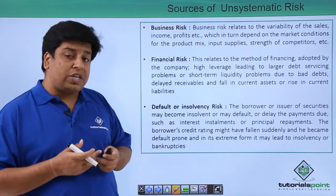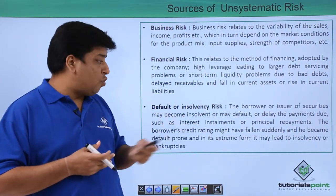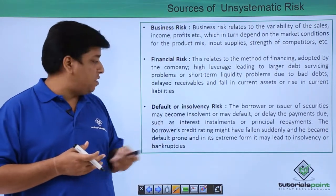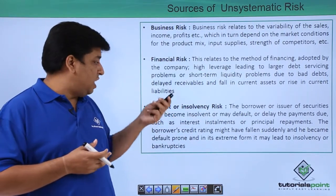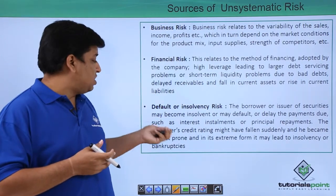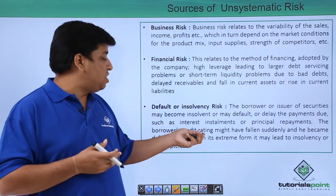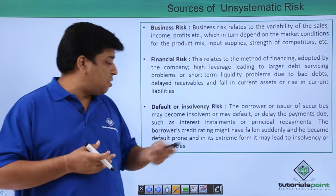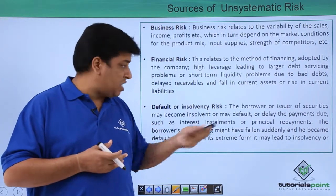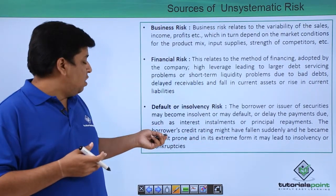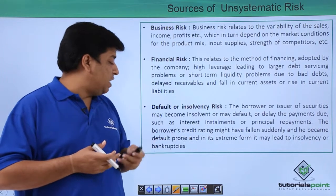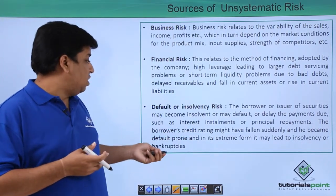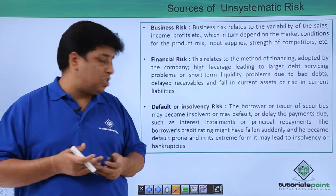Default or insolvency risk: the borrower or issuer of securities may become insolvent, or may default or delay the payments due, such as interest installments or principal repayments. The borrower's credit rating might have fallen suddenly and they became default prone, and in its extreme form it may lead to insolvency or bankruptcy.